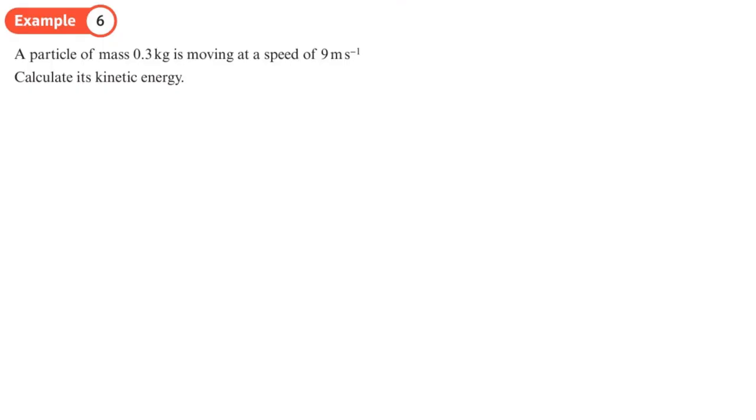A particle of mass 0.3 kg is moving at a speed of 9 meters per second. Calculate its kinetic energy. Kinetic energy equals half m v squared, so half times the mass times the velocity squared. Half times 0.3 times 9 squared equals 12.15 joules. That's the kinetic energy it has because of its speed, and the mass is also important as it forms part of the formula for kinetic energy.